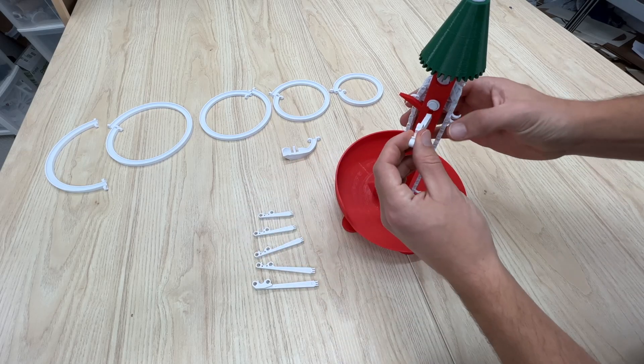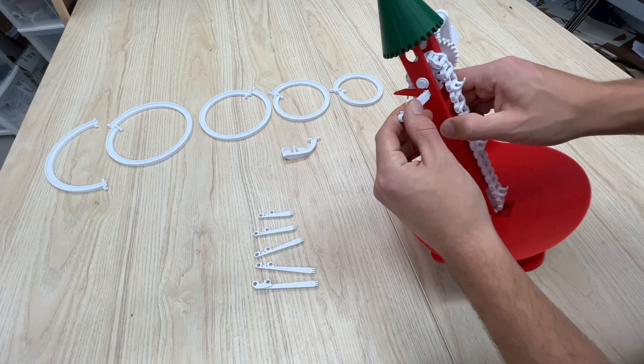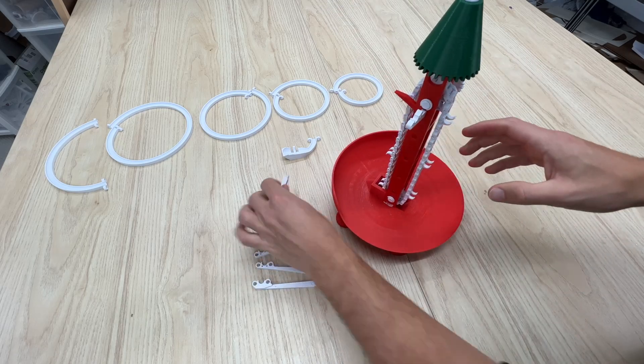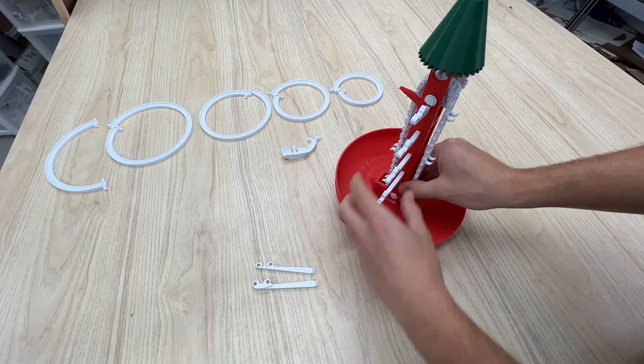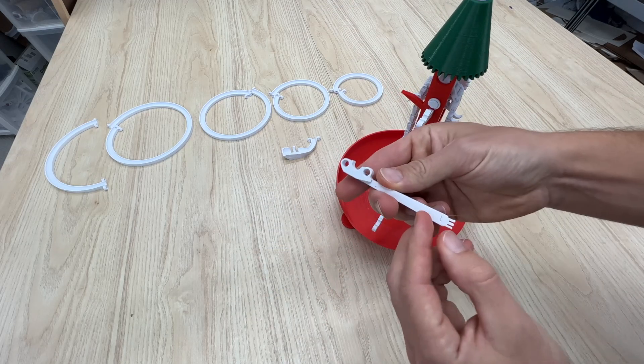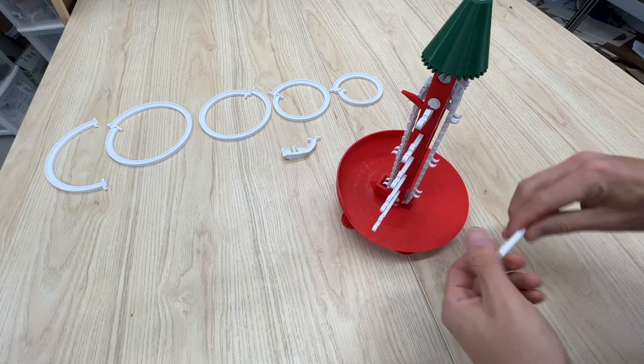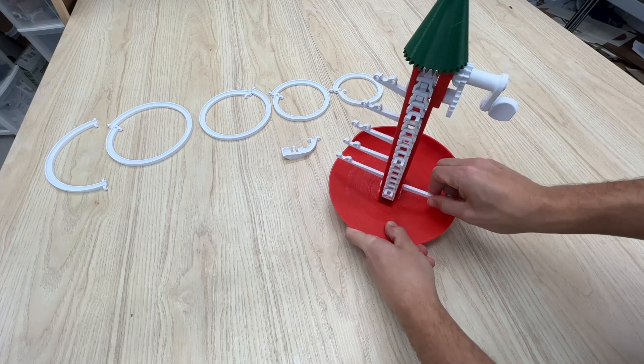Now grab your support pieces and start slotting them into the holes in the side of the stand one by one, going from the smallest one to the biggest one. And then the last one with this little piece sticking out of the side of it goes on the other side.